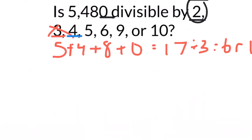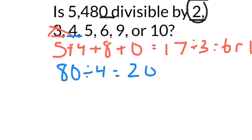Let's look at four. To decide if 5,480 is divisible by four, look at the last two digits. The last two digits are 80, and 80 can be divided by four, so 5,480 is divisible by four. To decide if it's divisible by five, look at the last digit — it ends in zero, so five goes in evenly. Is it divisible by six? It can only be divisible by six if it's divisible by both two and three. Since three doesn't work here, six will not go into 5,480.